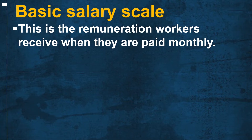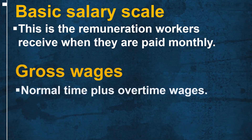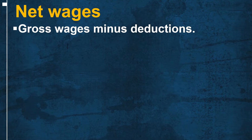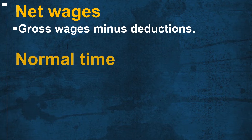When we talk about basic salary scale, we are referring to the remuneration workers receive when they are paid monthly. Gross wage is normal time plus overtime, while net wages is gross wages minus deductions.